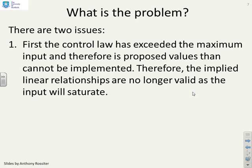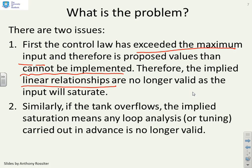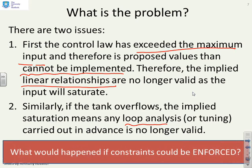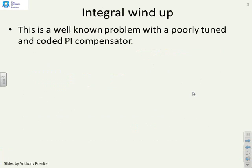This is just reiterating the main issues. The control law exceeded the maximum input and therefore proposed values that cannot be implemented. Therefore the implied linear relationships in your feedback law are no longer valid because the input is going to saturate. Similarly if the tank overflows, the implied saturation means any loop analysis you've done is no longer valid. What would happen if constraints could be enforced?